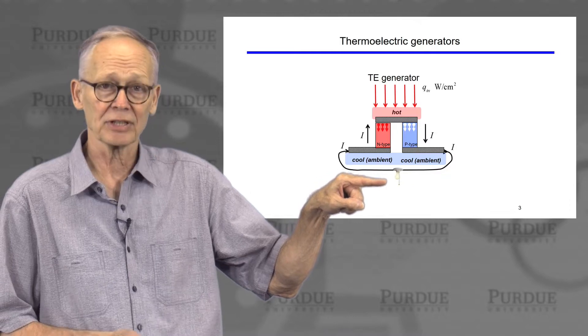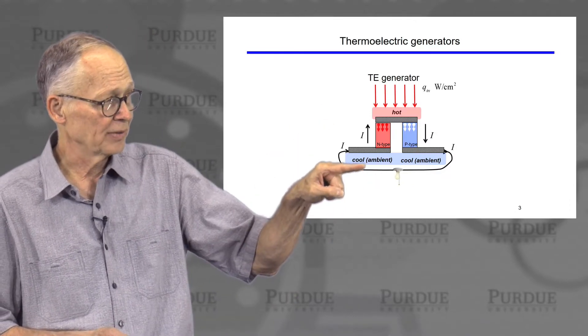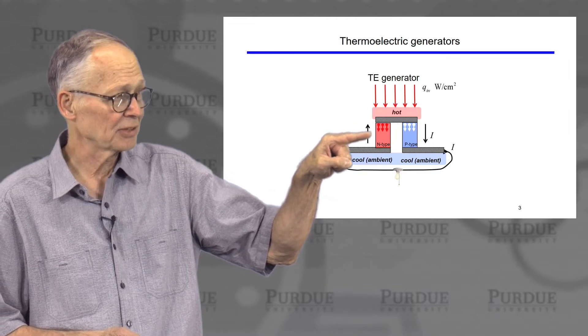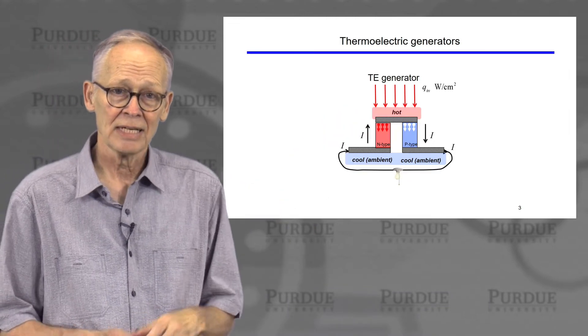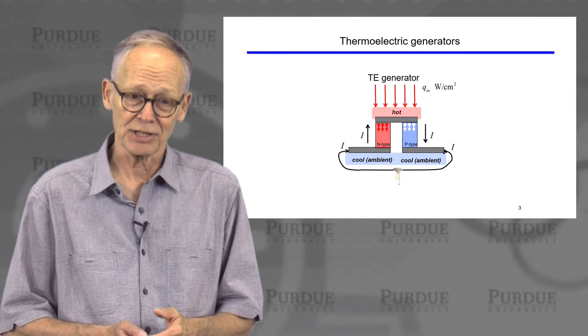We can make an external circuit, attach a load like a light bulb here. The current will flow then opposite the direction of the electrons and in the direction of the holes. We've converted heat into electricity. This is a thermoelectric generator.